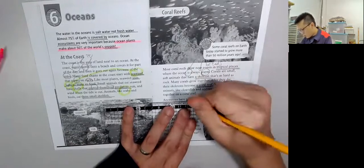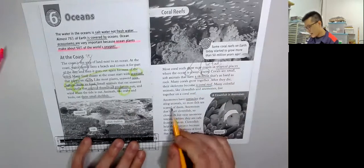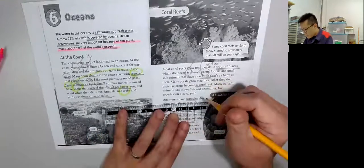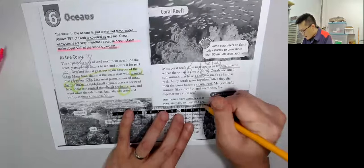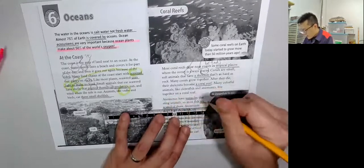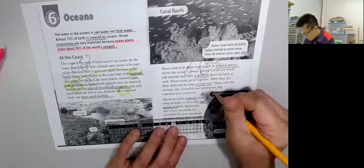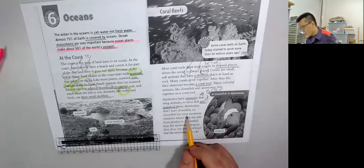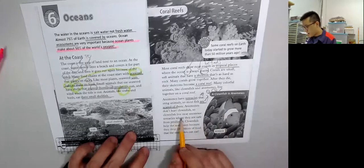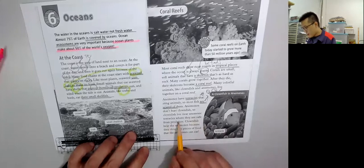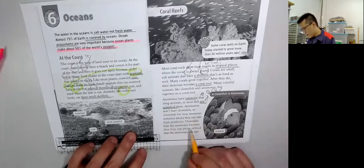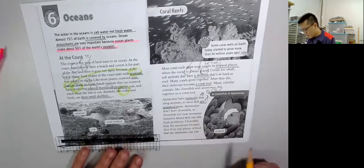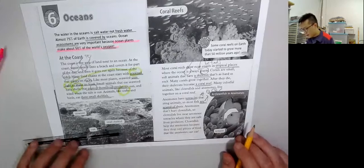And anemones have tentacles, 有一條條觸覺的東西, that sting animals. So most fish are scared of them. Be scared of something. And anemones don't hurt clownfish, so clownfish live near anemone tentacles where they are safe from predators. Clownfish help anemones because they drop in tiny pieces of food that the anemones can eat.